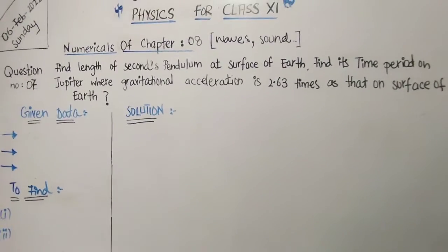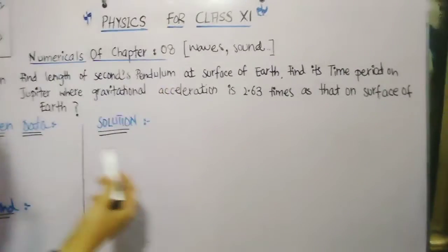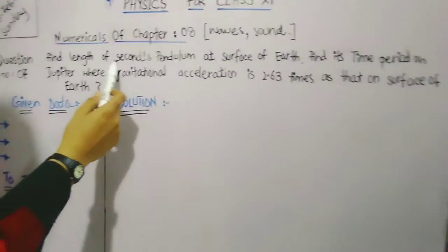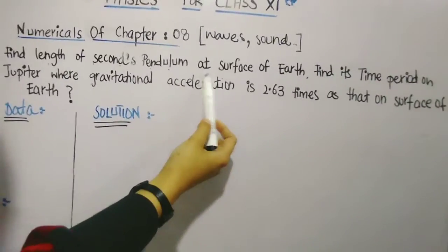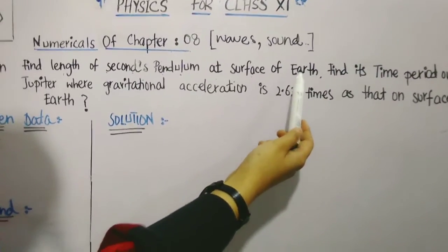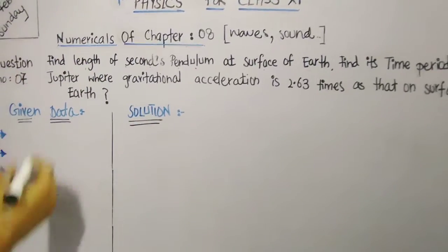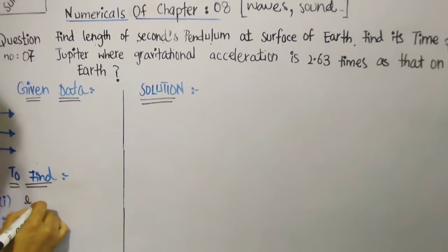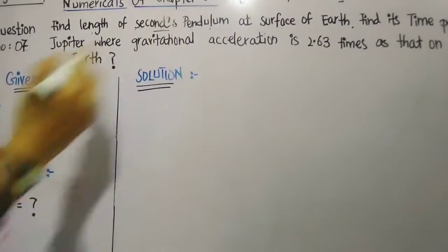Assalamu alaikum everyone. Now these are the numericals concerning the time period, so let us read the numerical. Find length of the second pendulum at the surface of the Earth. Okay, so this first sentence has given us three informations. Number one thing is that we need to find the length, so length is a question mark.